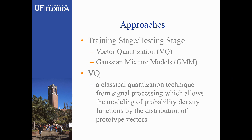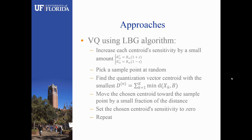Next, we will enter into the training stage and the testing stage. In this project, we will use vector quantization (VQ) and Gaussian mixture models (GMM) as the two methods. For VQ, it is a classical quantization technique from signal processing, which allows the modeling of probability density functions by the distribution of prototype vectors. We will use the LBG algorithm to do the VQ method. First, increase each centroid sensitivity by a small amount, then pick a sample point at random, find the quantization vector centroid with the smallest distance, and move the chosen centroid toward the sample point by a small fraction of the distance. The last step is to set the chosen centroid sensitivity to 0. These steps are repeated until the codebook contains M codewords.